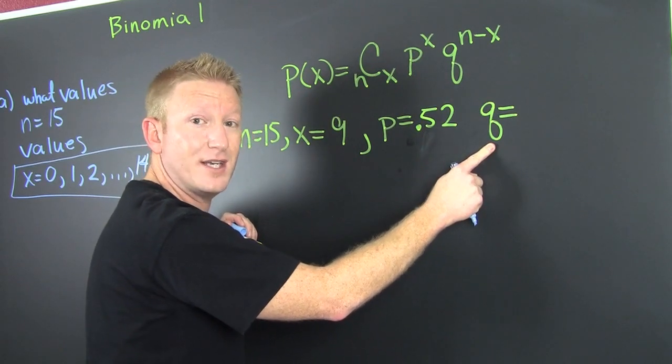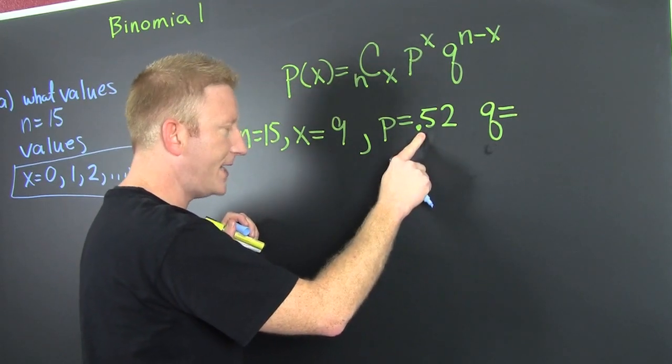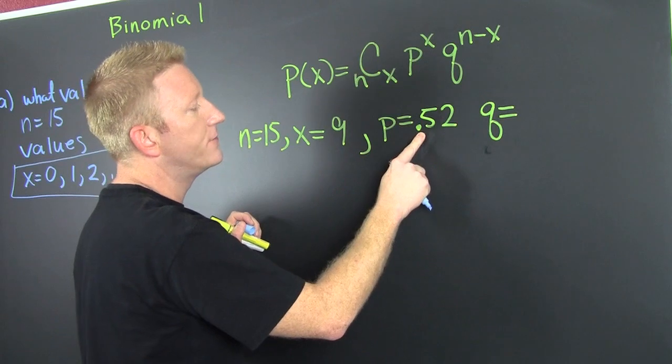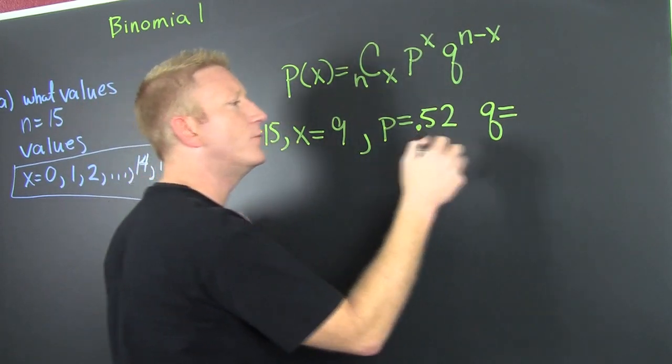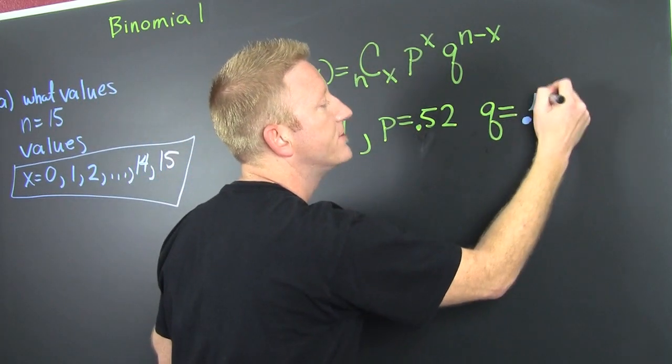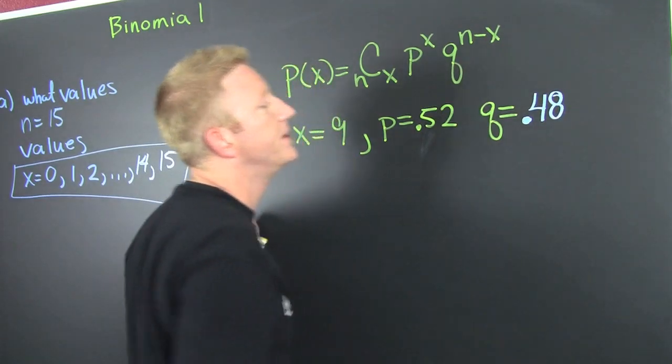Well, P plus Q equals 1. So you can take 1 and subtract that off. Or you can ask yourself, what do I add to 52 to get 1? And that's 0.48. Great.